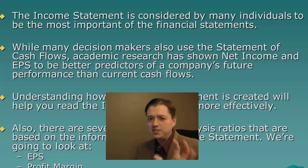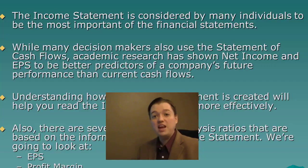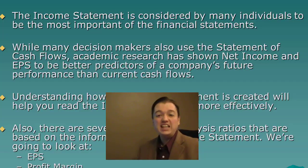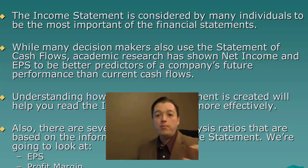Maybe not that we functionally fixate on it, but earnings per share is a key number in its ability to predict what's coming up. That also validates our accrual accounting, because net income takes all that cash information and then adds in our accruals from our adjusting entries. The fact that it provides such great information is really important for us. Earnings per share and net income is a crucial number both for what it provides to the market and what it validates for us as accounting professionals.